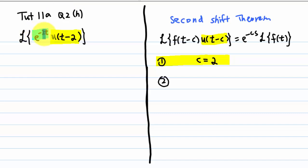e to the minus 2t is equal to f of t minus c. Since we know c is equal to 2, so f of t minus 2 is equal to e to the minus 2t.